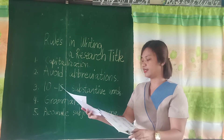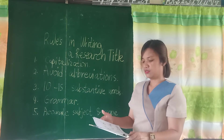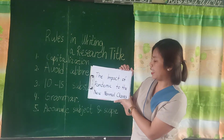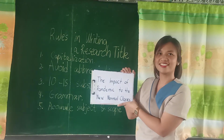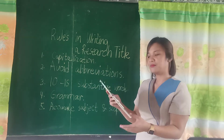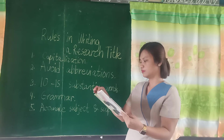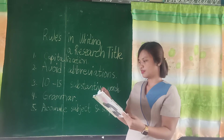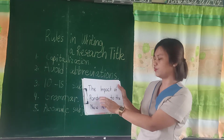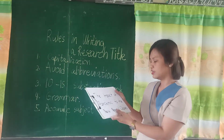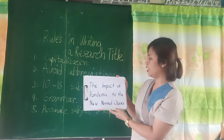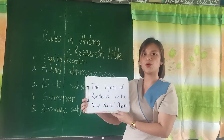The last one is 'The Impact of Pandemic to the New Normal Classes' — which seems similar to a previous title, already mentioned. The word count is 9, within range. Capitalization is okay. Grammar is okay. Accurate subject and scope: okay.